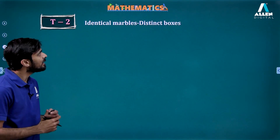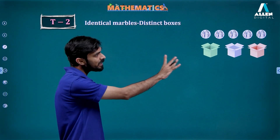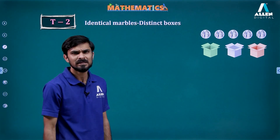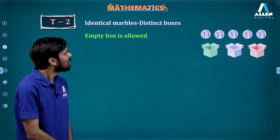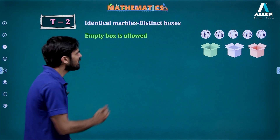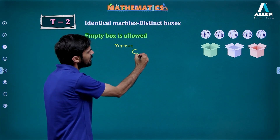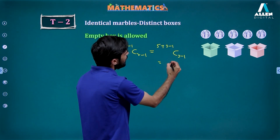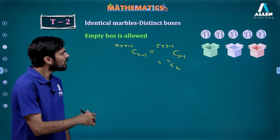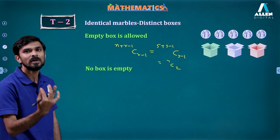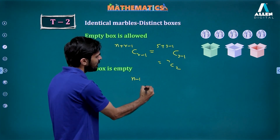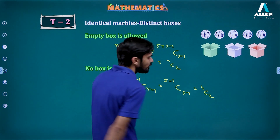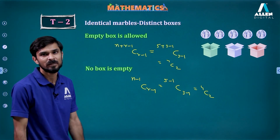The next case is identical marbles and distinct boxes. Isn't this the same as distributing n identical coins among r beggars? If empty boxes are allowed, it is n+r−1 C r−1, which is 5+3−1 C 3−1 = 7C2. For no box empty, it is n−1 C r−1, giving us 5−1 C 3−1 = 4C2. This is handled directly by the beggar's method.